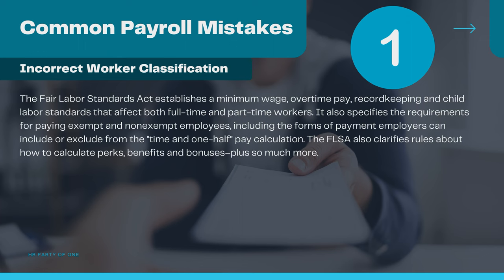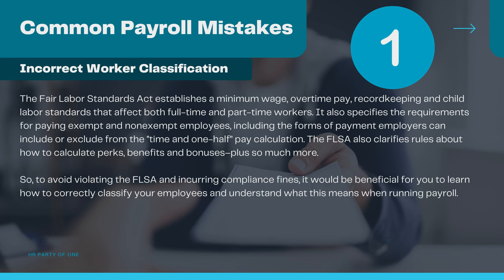The Fair Labor Standards Act established a minimum wage, overtime pay, record keeping, and child labor standards that affect both full-time and part-time workers. It also specifies the requirements for paying exempt and non-exempt employees, including the forms of payment employers can include or exclude from the time-and-one-half pay calculation. The FLSA also clarifies rules about how to calculate perks, benefits, and bonuses, plus so much more. So to avoid violating the FLSA and incurring compliance fines, it would be beneficial for you to learn how to correctly classify your employees and understand what this means when running payroll.